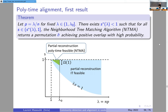We'll carve a polynomial time feasibility region out of the information-theoretic feasibility region. The first result gives us a small triangle with non-empty interior that we'll improve upon. We have one polynomial time algorithm — the so-called neighborhood tree matching algorithm — that succeeds at partial alignment in a certain region of the phase space. This is work I did with Luca Ganassali.